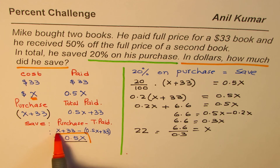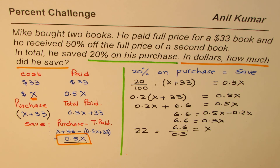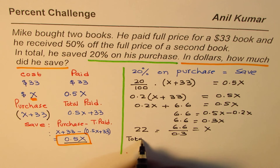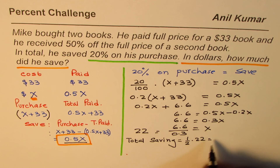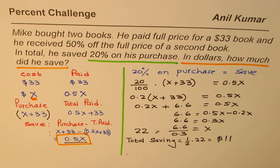Even at this stage you can make a mistake, so be careful. Total savings equal half of the price of the second book, which is half of $22, so that is $11. That is the saving Mike did on this particular purchase. I'm Anil Kumar and I hope these steps help you understand the process. You can always share and subscribe to my videos — thank you and all the best.